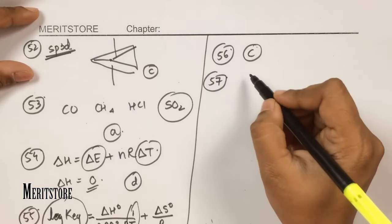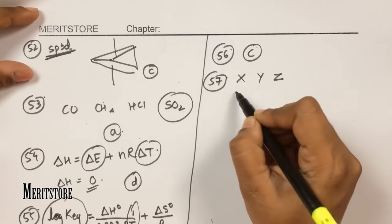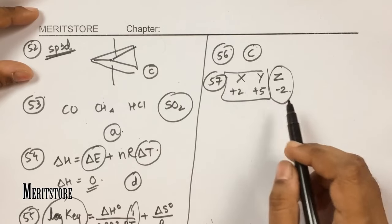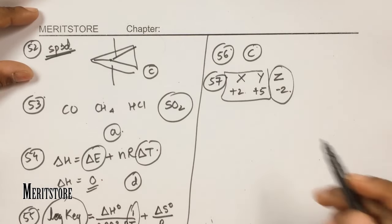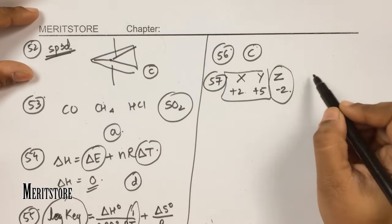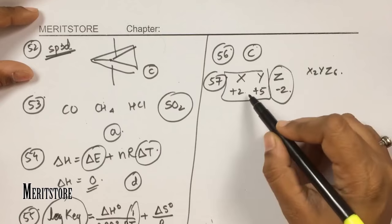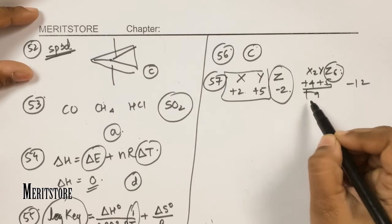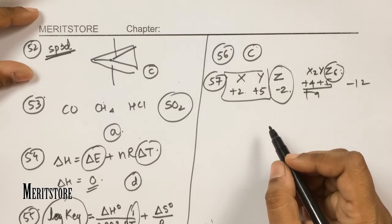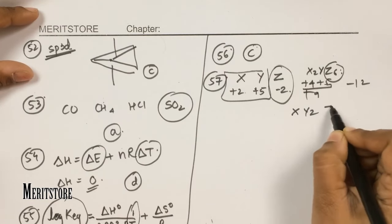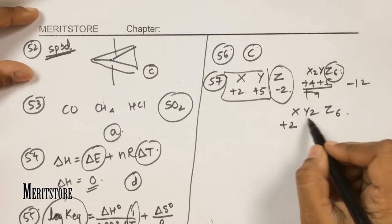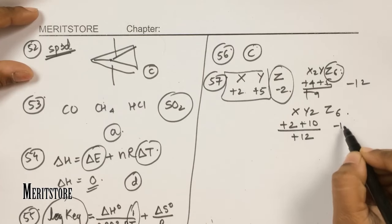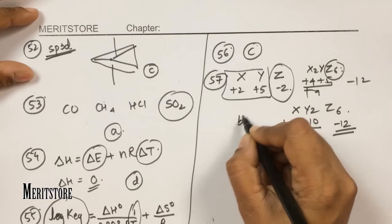Question number 57: oxidation states of compounds are given — X is +2, Y is +5, Z is −2. Their sum must equal zero. Checking option B: X (+2) + 2Y (2×+5 = +10) gives +12, and 6Z (6×−2 = −12) gives −12. The total is zero, satisfying the equation. Therefore option B.